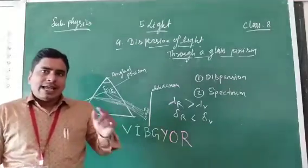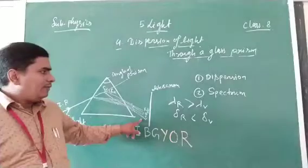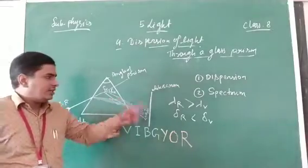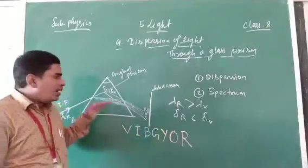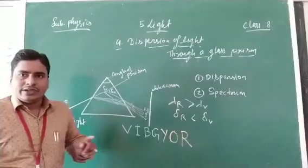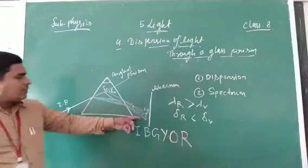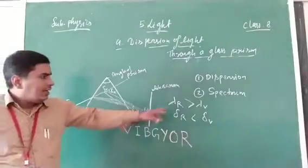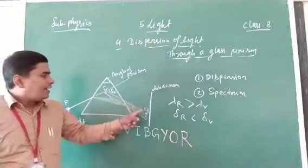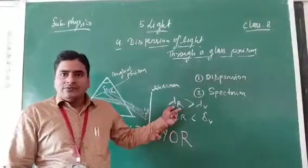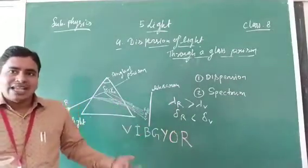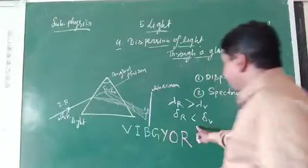The color of light with minimum wavelength has maximum deviation from its original path. The angle of deviation delta-R and delta-V is the angle between the original incident ray and the emergent ray. Violet light deviates maximum because its wavelength is minimum compared to red light, and red light deviates minimum because its wavelength is maximum.